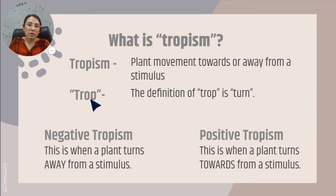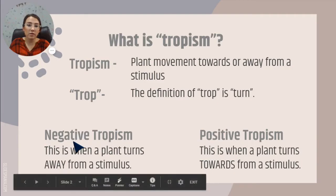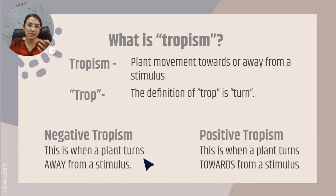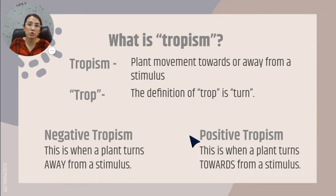Breaking down the word — just 'trope' — the definition of trope itself is 'turn.' So tropism has a lot to do with movement of a plant. Now, we have two types. Negative, which is when the plant turns away from the stimulus. Positive, that's when the plant turns towards or gets closer to the stimulus.